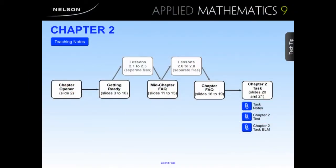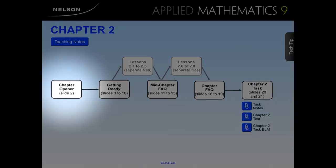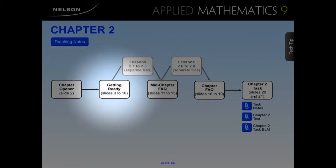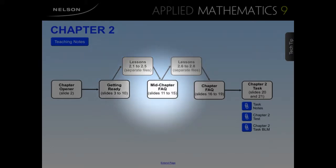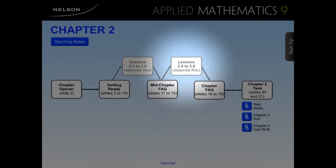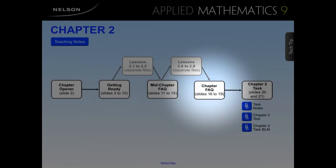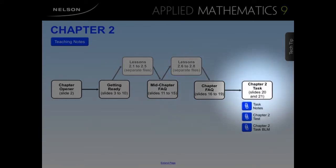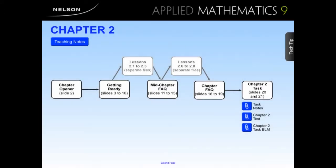Each chapter of the Applied Mathematics 9 resources is organized the same way and begins with a chapter organizer. The organizer provides an outline of a typical chapter. You'll see that each chapter includes a chapter opener, a diagnostic assessment called Getting Ready, a series of lessons, mid-chapter review, another series of lessons, chapter review, and a chapter task. You can access each of these slides by clicking on the link from the organizer.